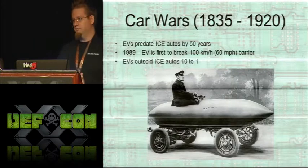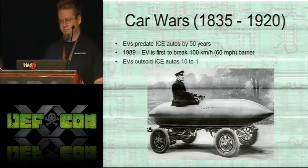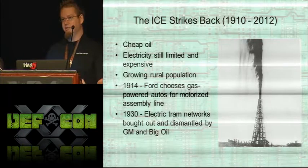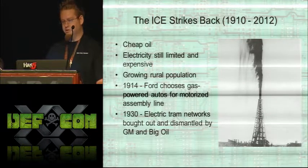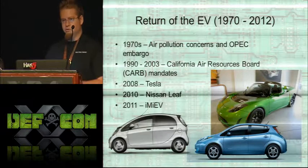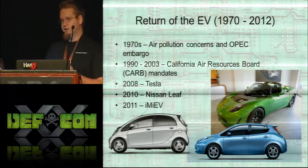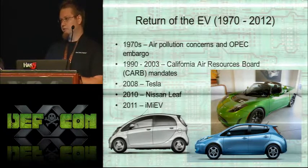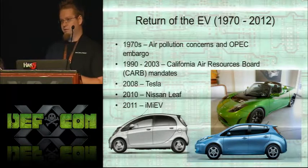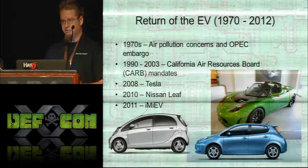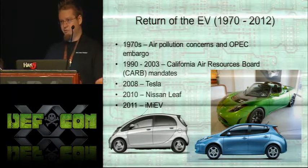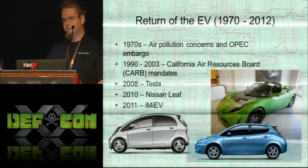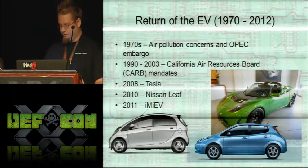EVs have been around for a long time — they're not something new, but they've been starting to make a comeback. Originally, electricity was really expensive and people didn't have it in their homes, and once oil was struck it was a lot cheaper to drive gas cars. There have been a few events in history that caused EVs to have surges — an OPEC oil embargo, California car mandates. Recently we have the Tesla and Nissan Leaf hitting the market, primarily because of advances in smartphone batteries that have really driven battery technology to make an electric car feasible.